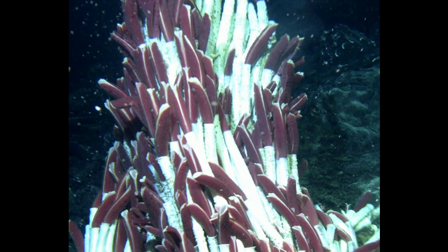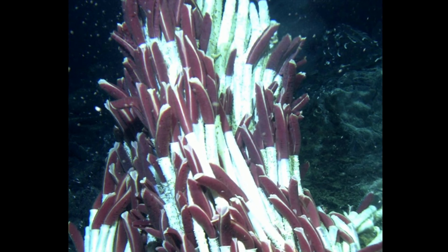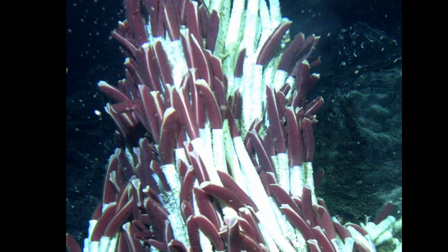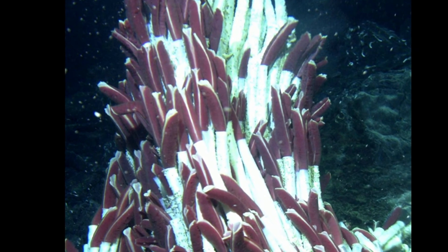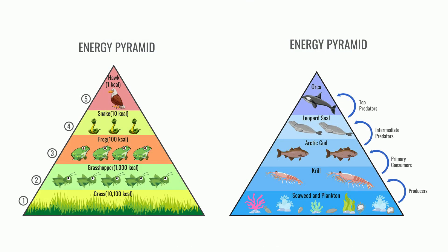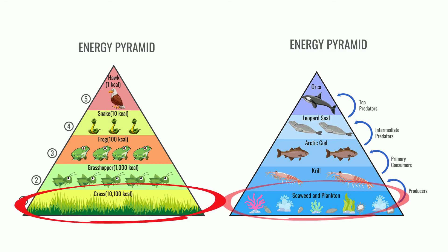When there is no sunlight, some organisms like these giant tube worms use bacteria found inside them. They oxidize hydrogen sulfide, add some carbon dioxide and oxygen, and produce sugar, sulfur, and water. Autotrophs are also called producers, and they are the foundation of all ecosystems.